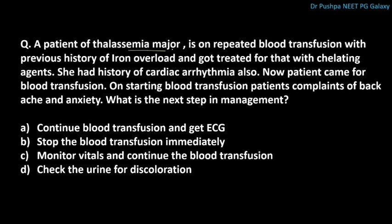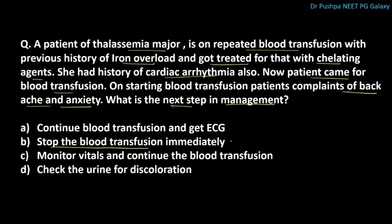A patient of thalassemia major on repeated blood transfusion with a previous history of iron overload, treated with chelating agents, and with a history of cardiac arrhythmia, comes for blood transfusion. On starting the transfusion, the patient complains of backache and anxiety. The next step in management is to stop the blood transfusion immediately, because of the previous history of iron overload and cardiac arrhythmias.